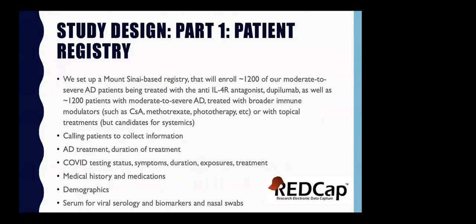We set up a Mount Sinai-based registry enrolling at least 1,200 moderate to severe AD patients treated with dupilumab and at least 1,200 patients with moderate to severe atopic dermatitis treated with broad immune modulators such as cyclosporine, methotrexate, phototherapy, or topical treatments. We obtained IRB approval and are calling all patients to collect information including AD treatments, duration, COVID testing status, symptoms, duration, exposures and treatment, medical history, demographics, and history of asthma and comorbidities. We are also obtaining serum for viral serology, biomarkers, and nasal swabs. The second part will involve cytokine profiling in blood using O-link including ACE2 measurements.